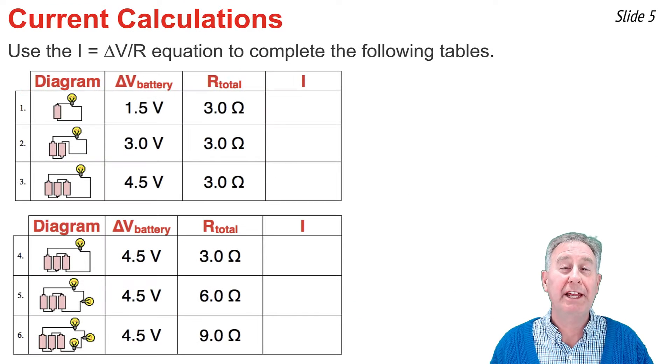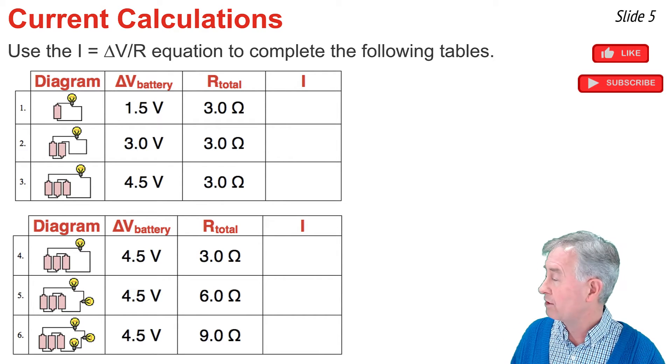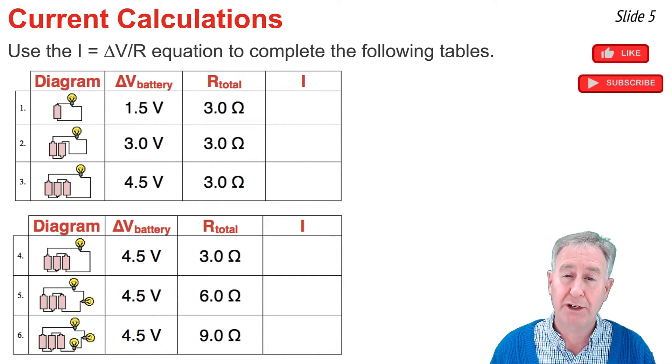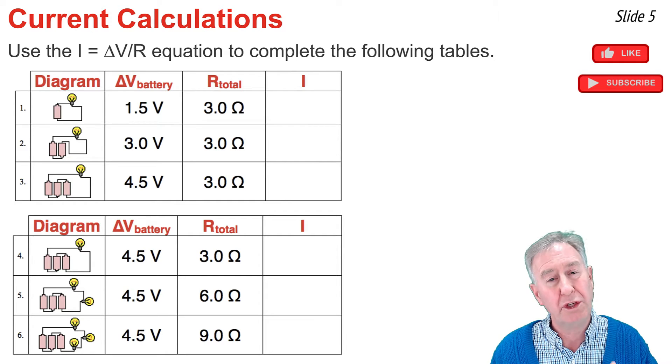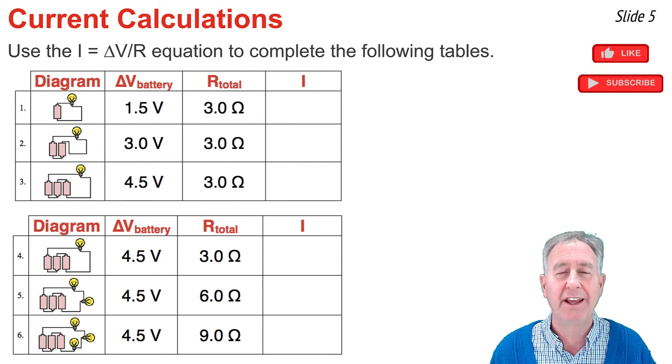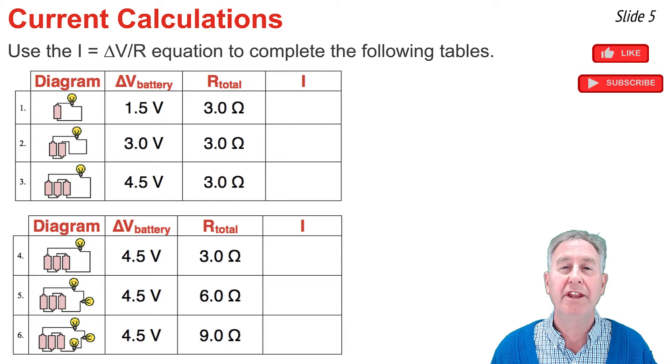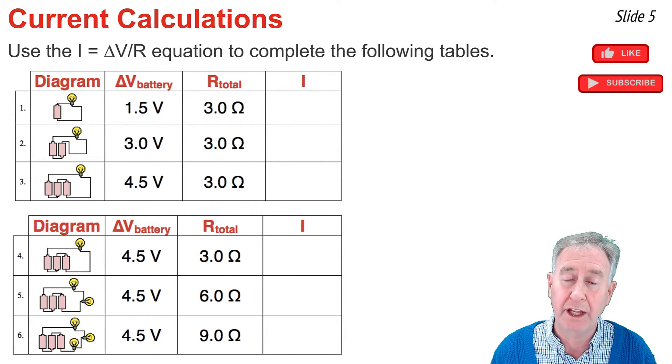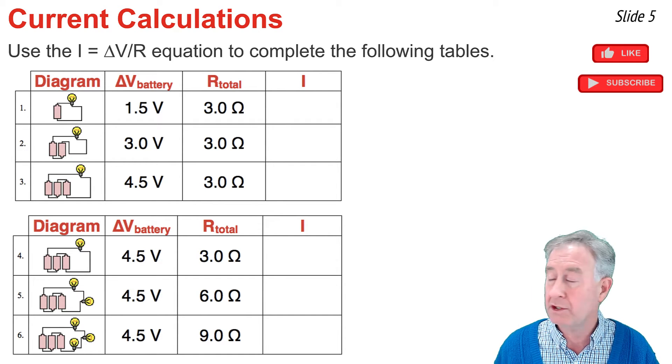The equation I equals delta V divided by R is commonly used to calculate the current. We have six simple examples here. Look in the top table where delta V and R values are given, and we have to calculate I. Before we do that, look in the diagram column to see what's going on. In diagrams 1, 2, and 3, there's one light bulb. Light bulbs are resistors, and since there's one in every row, the resistance values are not changing going from row 1 to 3.